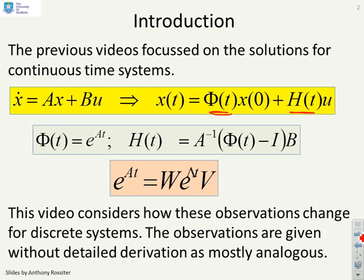What we want to do now is consider how do these observations change if we have a discrete state space system. And what you'll notice is this video is going to be relatively quick compared to all the others because most of the results are actually analogous.